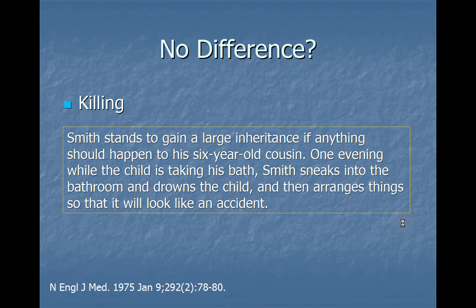Here's an analogy from the medical literature that illustrates. Here's an example of killing: Smith stands to gain a large inheritance if anything should happen to a six-year-old cousin. One evening while the child is taking a bath, Smith sneaks into the bathroom and drowns the child, then arranges it so that it will look like an accident. Obviously wrong.